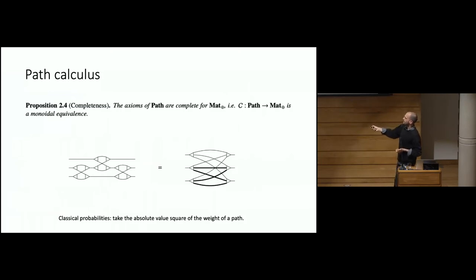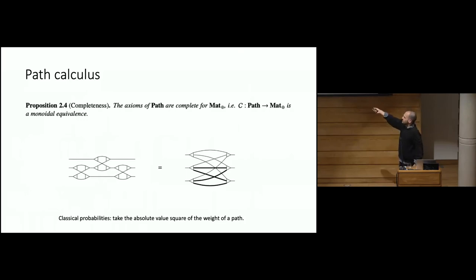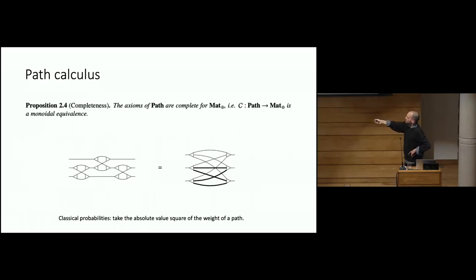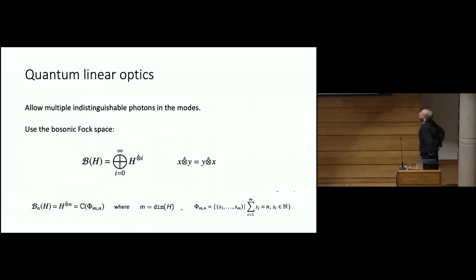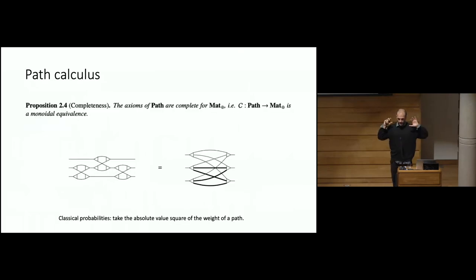The proof is simple because you can start from any diagram and reduce it to a normal form — a weighted bipartite graph — by using the bi-algebra law repeatedly to put all co-monoids on one side and all monoids on the other. In the middle you have weights for every connection, given by multiplying the weights of paths. So these already describe the classical probabilities, and we have this basic calculus to reason about matrices that we can implement in an optical lab.